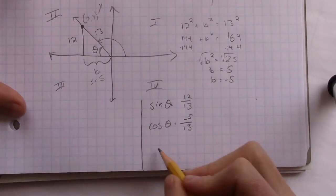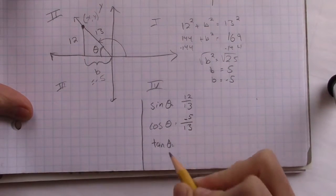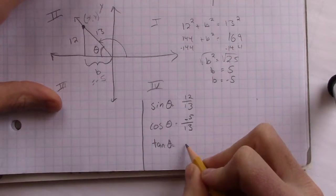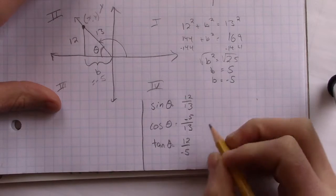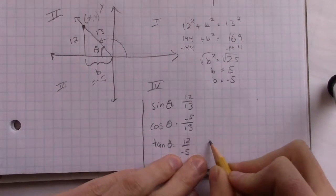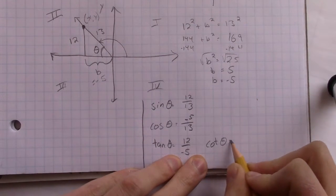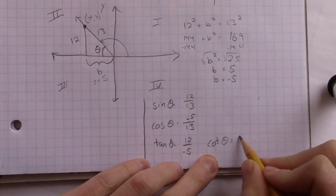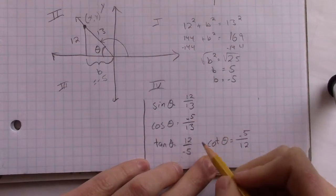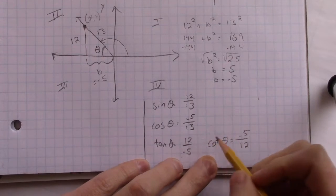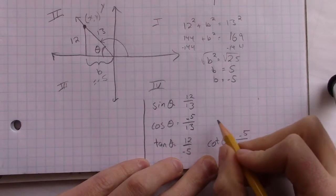So what is tangent, then? So tangent of theta is opposite over adjacent. So that would be 12 over negative 5, right? And then cotangent of theta is going to be the reverse of that. So the negative 5 over 12. And this is a nice one right now. I don't have any radicals. I don't have any square roots. So I don't need to rationalize any of these. I can just flip them over.